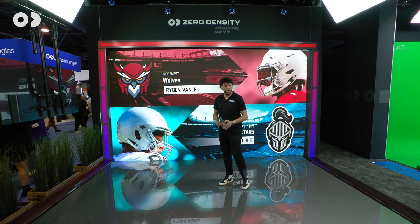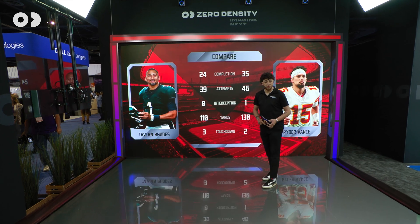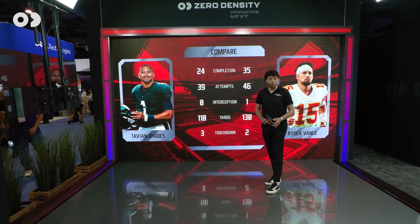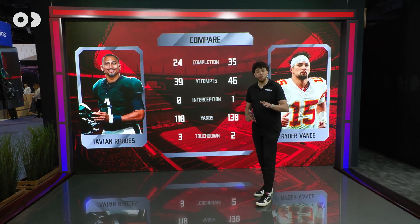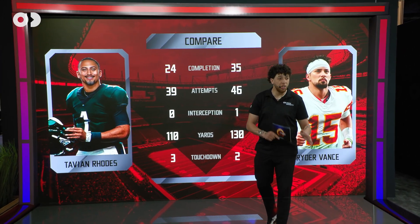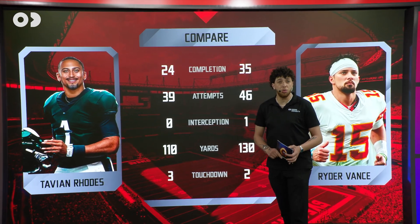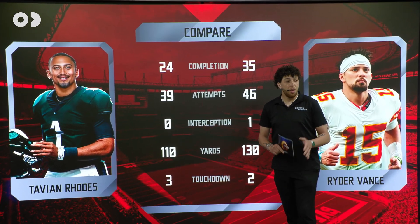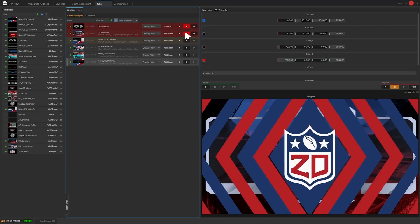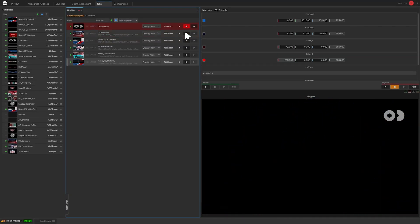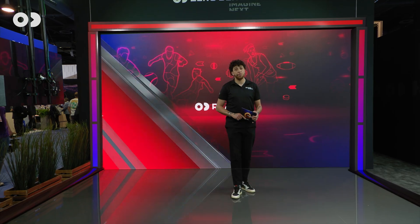Let's move on to a comparison table. With just a single take next, your TV or graphics operator can switch templates or move between visual states — everything kept tight, clean, and consistent on-air. But it doesn't stop at just overlays and screens.